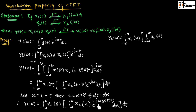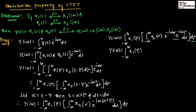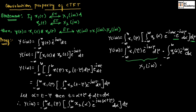Therefore, we can write the equation as y of j-omega equal to integration from minus infinity to infinity of x1 of tau, into integration from minus infinity to infinity of x2 of alpha, exponential to the power of minus j-omega times alpha plus tau, d-alpha, d-tau. Rearranging, this becomes exponential to the power of minus j-omega alpha into exponential to the power of minus j-omega tau, giving us y of j-omega equal to integration of x1 of tau, exponential to the power of minus j-omega tau d-tau, into integration of x2 of alpha, exponential to the power of minus j-omega alpha d-alpha.